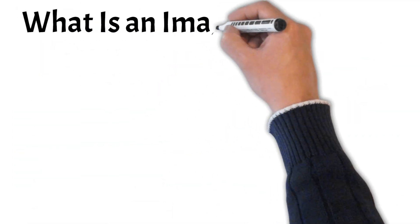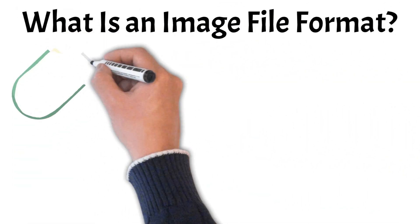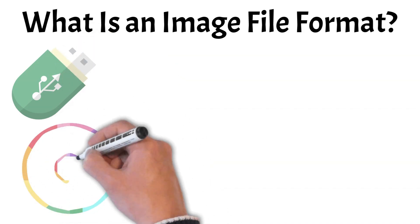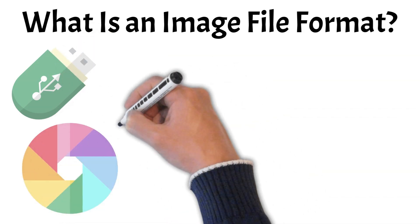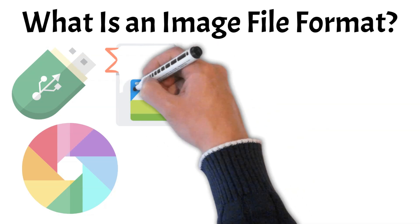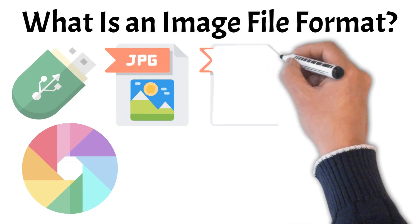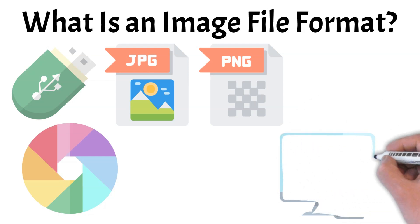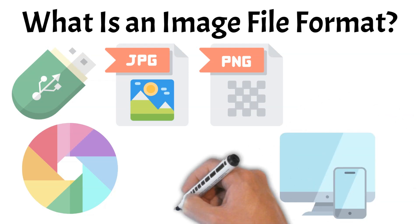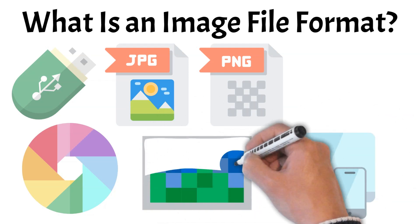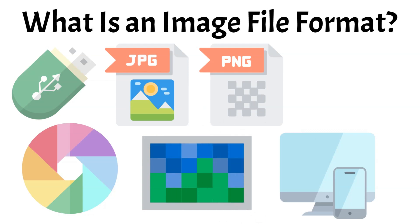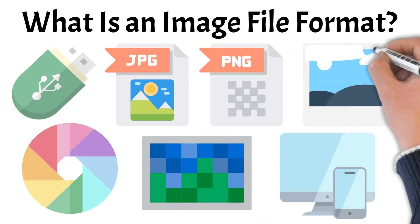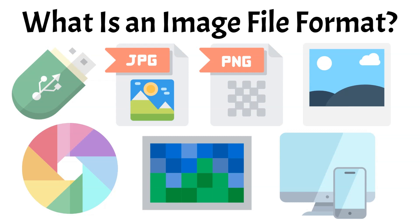An image file format is a way of storing digital pictures using specific rules for compression, color, and data structure. Some formats like JPEG reduce file size by removing details, while others, like PNG, keep images sharp with lossless compression. Choosing the right format depends on factors like quality, transparency, and file size. Now let's look at the most common image formats and when to use them.